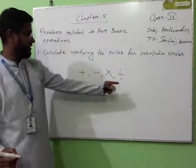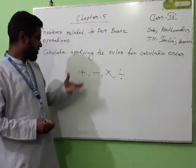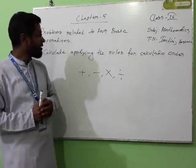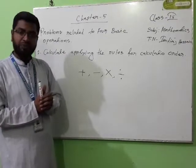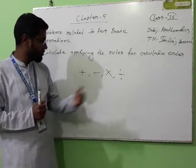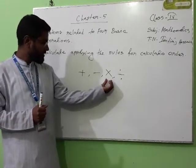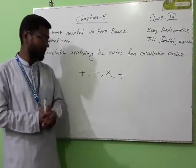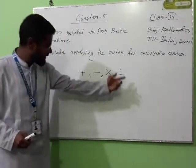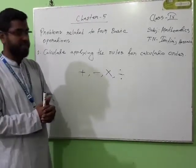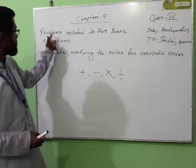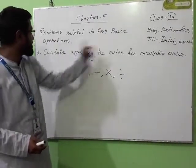I have written the symbol. Addition — we know how to do addition. Already we have learned chapter 2, and subtraction also, multiplication, division — chapter 3 and chapter 4. We have learned about them. Now, in this chapter, we will apply these four basic operations in the same math. For that reason, this chapter's name is problems related to four basic operations.